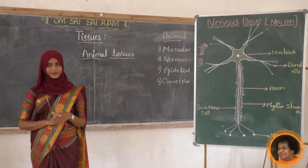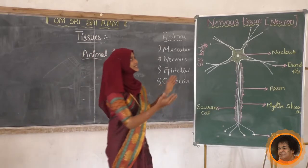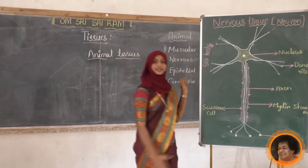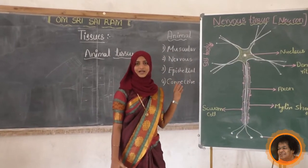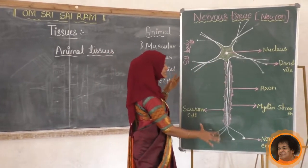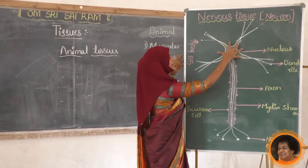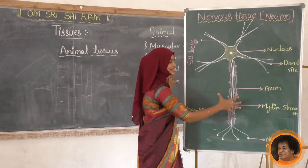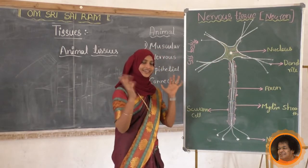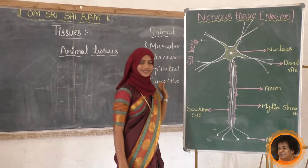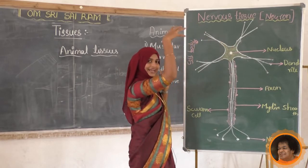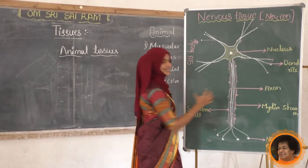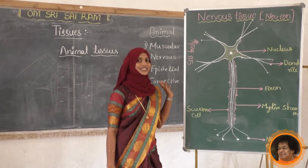We will see the structure - it is a simple structure. Nervous tissue is also called neuron. Here is the structure of a neuron. We can see the main part called the cell body - like a head. Just resemble this to a tree: a tree has a root and main portion. Similarly, the neuron has a cell body. The cell body is composed of cytoplasm, and at the center there is a nucleus like in other cells.